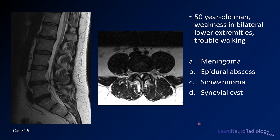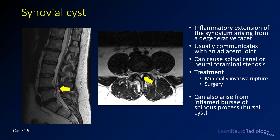Case number 29: a 50-year-old man with weakness in bilateral lower extremities and difficulty walking. Sagittal T2 and axial T2 MR images. Choices are meningioma, epidural abscess, schwannoma, or synovial cyst. The answer is synovial cyst. You see a cystic lesion along the posterior margin of the spinal canal with a dark T2 rim and central T2 hyperintensity. It has a tail connecting to a left-sided degenerated facet joint and is asymmetric to the left, causing narrowing of the spinal canal. If off midline and connected to a joint, call it a synovial cyst; if midline near the spinous process, consider a bursal cyst.